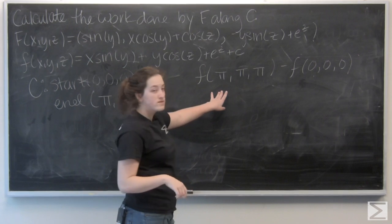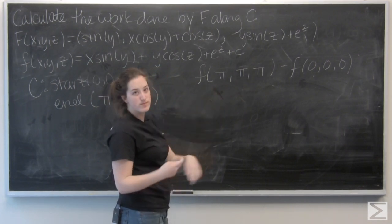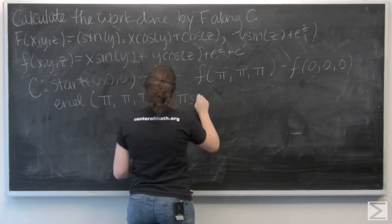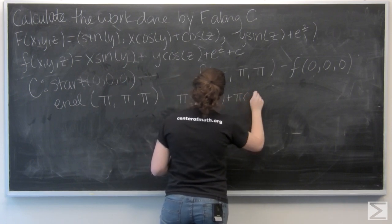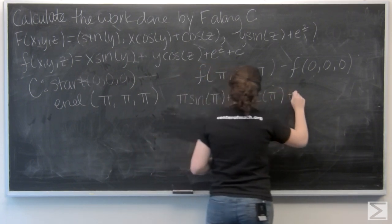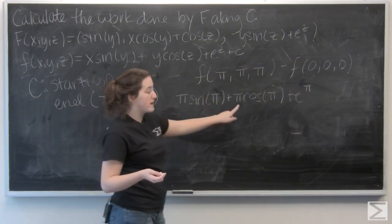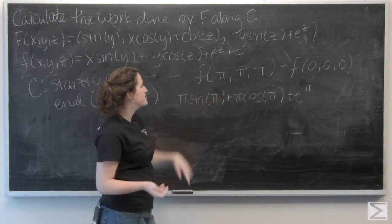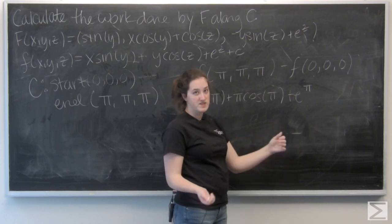Let's go ahead and plug in pi everywhere I see an x, y, or a z, so that I can find f of pi pi pi. So, I've got pi sine of pi plus pi cosine of pi plus e to the pi, and then I'm going to leave out this plus c, because the c is going to be in both of them, I'm going to get c minus c, that's going to be 0.